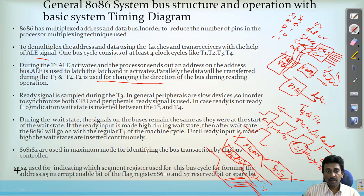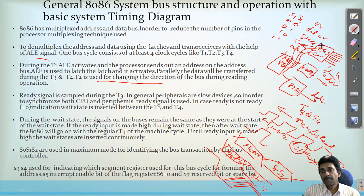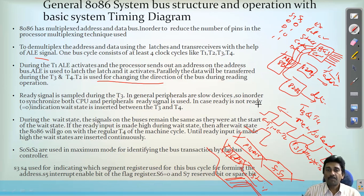By providing values on S3 and S4, it indicates which segment is used for the bus cycle for forming the address. When instructions come from memory to the microprocessor, the segment address is provided by the values of S3 and S4. S5 is the interrupt enable flag bit from the flag register. S6 is logically always 0. S7 is a spare bit not currently used.